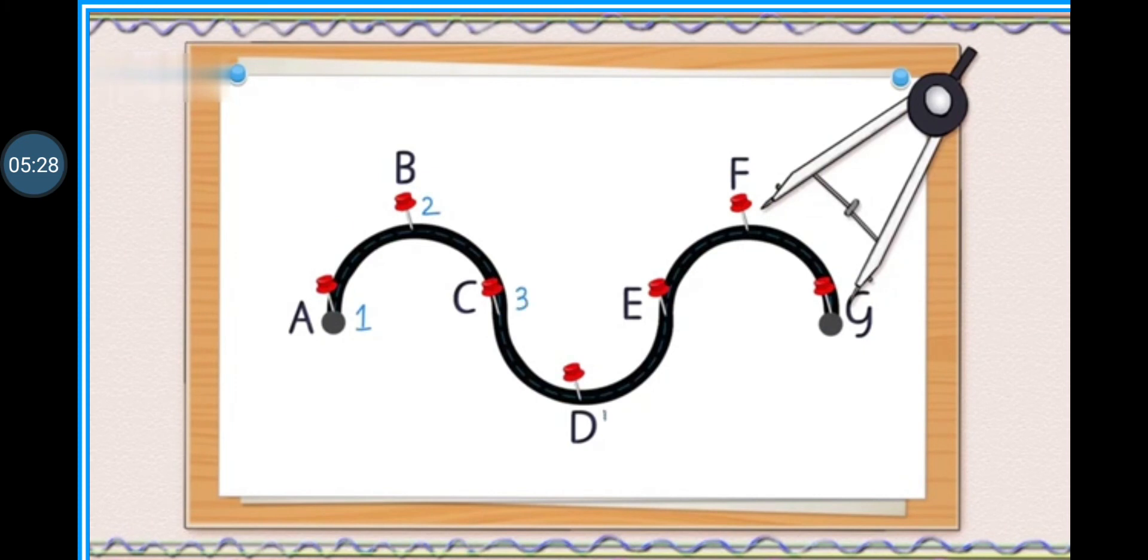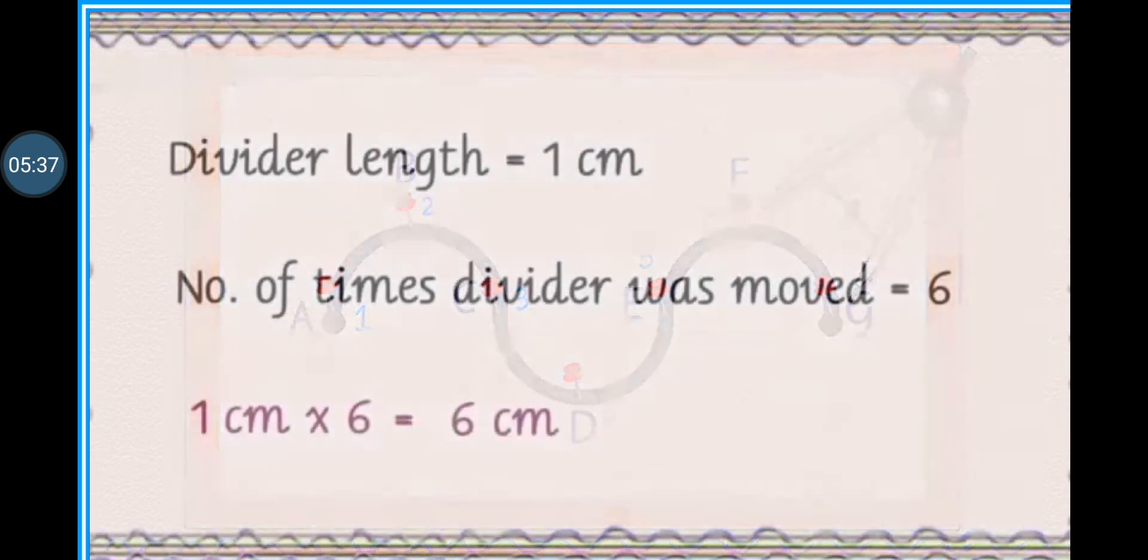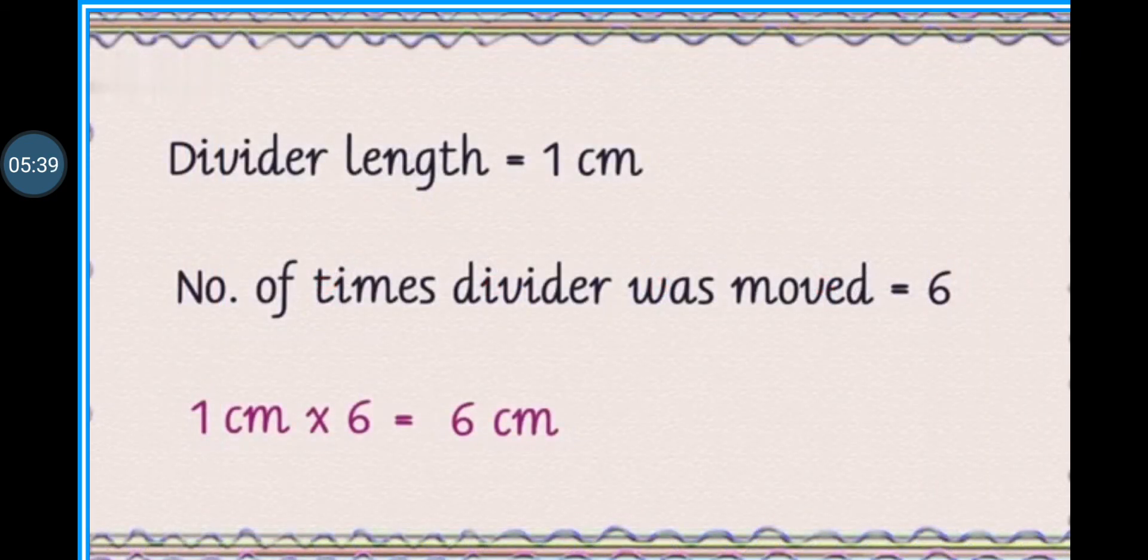How many times? We moved it 6 times. So we can see that the divider's length is 1 centimeter. So 6 times we moved it. 1 centimeter multiplied by 6 is equals to 6 centimeter. It means that the curved line that we measured with the help of divider is 6 centimeter long.